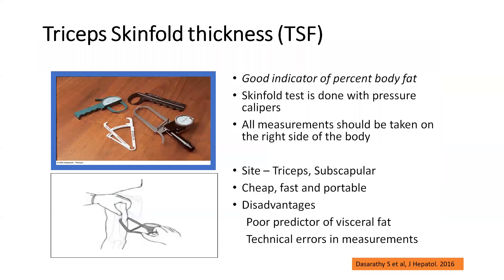Then comes triceps skinfold thickness. We require a caliper — most commonly the Harpenden caliper, which is shown in the figure. It can be applied at two sites: the triceps and the subscapular region. Measuring triceps skinfold thickness gives a good indicator of percentage body fat. The advantages are that it is cheap, fast, and portable. However, it is a poor predictor of visceral fat, and in patients with ascites or gross edema it may give a false reading. For screening purposes, it is a good test, and using age- and sex-specific cutoffs we can assess whether the patient has malnutrition.